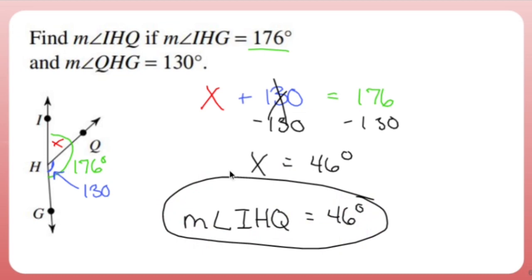Angle addition postulate with really basic numbers, nothing crazy, no wacky problems. You could solve this without using an X. You could solve this using common sense just by saying, isn't it just 176 minus 130? Yep.